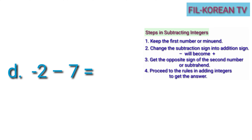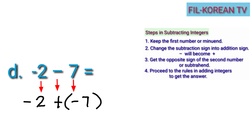Last example: negative 2 minus positive 7. First step, keep the minuend, negative 2. Second, change minus to plus. Third, get the opposite of the subtrahend, positive 7, so it will become negative 7. The problem now becomes negative 2 plus negative 7. We will apply the rules in adding integers with both negative signs — we just add the numbers and then copy the negative sign. 2 plus 7 equals 9, and copy the negative sign. So, negative 2 minus positive 7 equals negative 9.